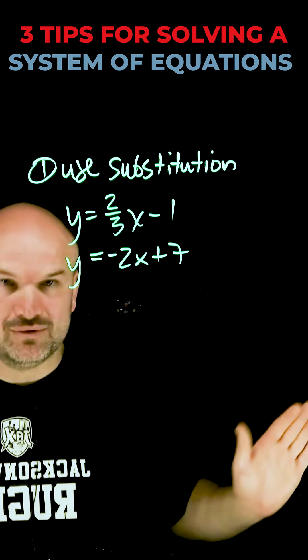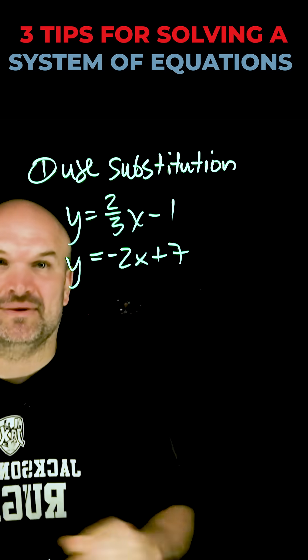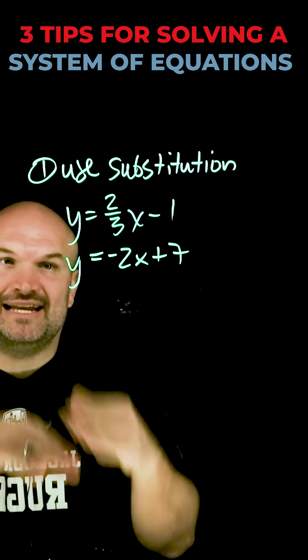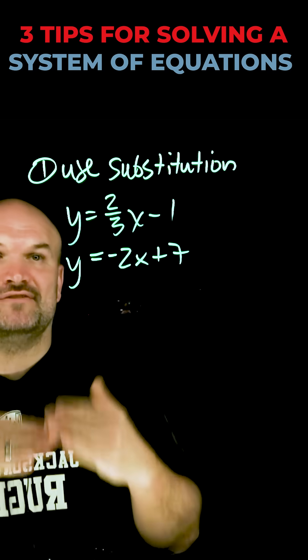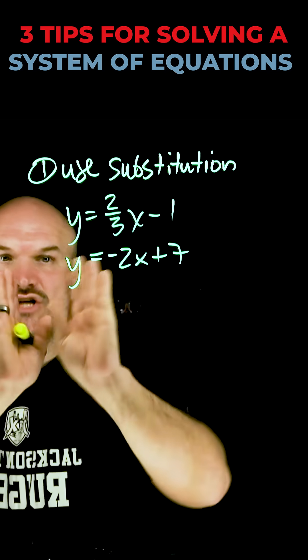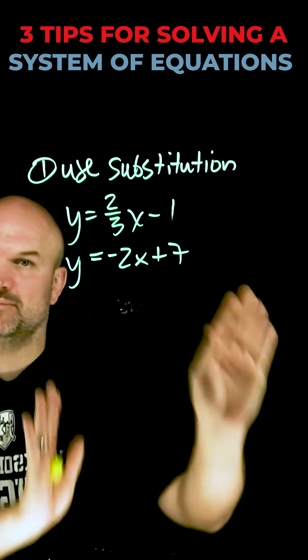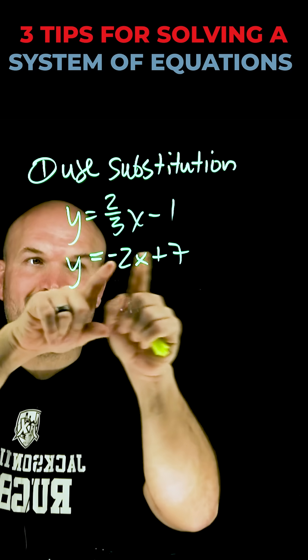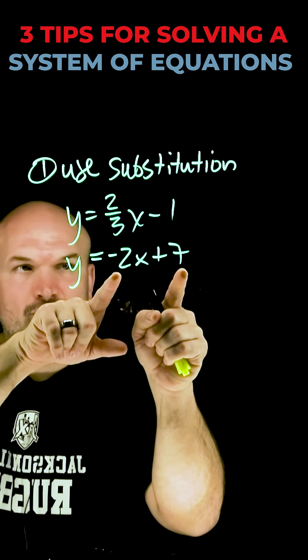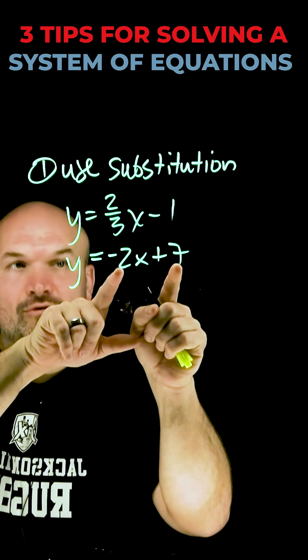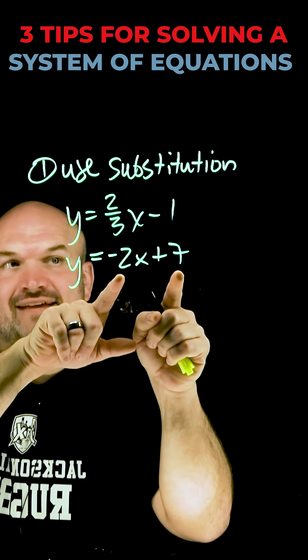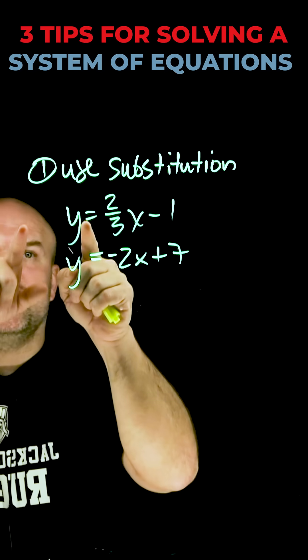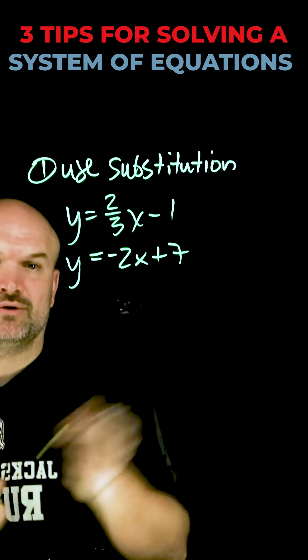I don't like to use substitution any other time. In my opinion, it just makes your life a lot easier to already have a variable isolated, because if I know y is equal to negative 2x plus seven, I can replace this negative 2x plus seven for y in this other equation.